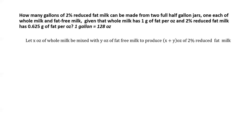What governs whether we have the right proportion? We need to get the proportion of fat right. So in order to produce 2% reduced fat milk by mixing X ounces of whole milk and Y ounces of fat-free milk, X and Y need to be in the right amount so that we have the right amount of fat in the resulting product. X and Y may have certain constraints, which we'll find out.